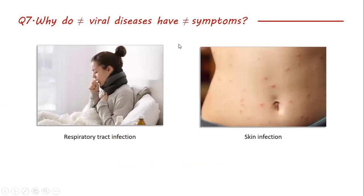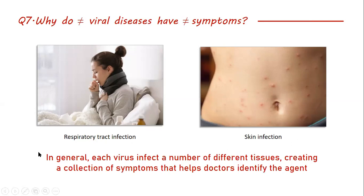A good example: a virus that infects cells in the respiratory tract will cause a cough because the tissue affected is the tissue of the lungs. While a virus that cannot recognize the lungs but can recognize the skin will produce a rash and not a cough. In general, viruses don't infect only one tissue — they infect a collection of tissues because these tissues share some receptors. This collection of symptoms is what allows the doctor to point to one virus as the cause. For example, a cough and fever is probably a common cold, but a cough, fever, and back pain is more probably flu, because you have a different collection of symptoms.